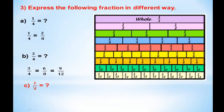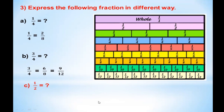Now let's do one by two. One by two is equal to two by four, three by six, four by eight, five by ten, and six by twelve. You can do this by yourself as well. This is the way you read the fraction wall and write which fraction is equivalent to what.